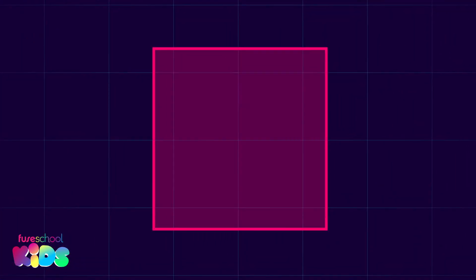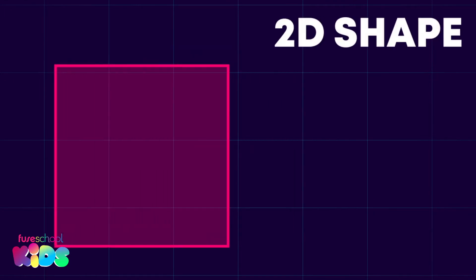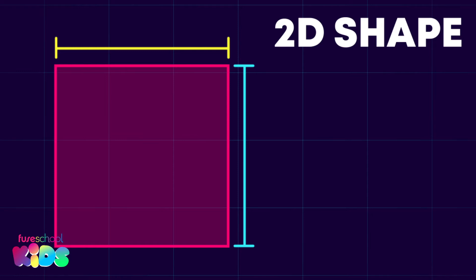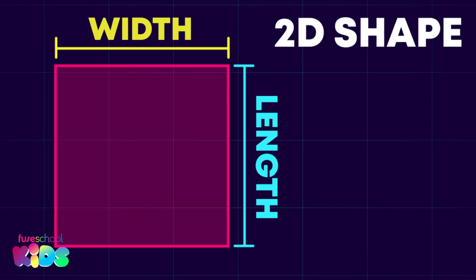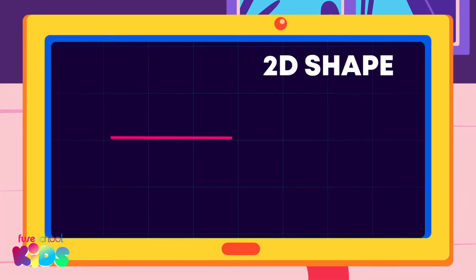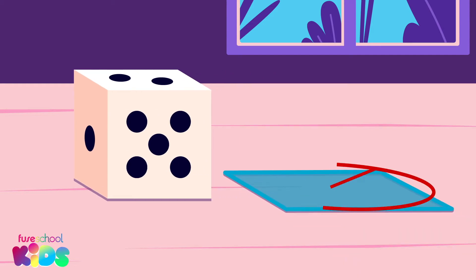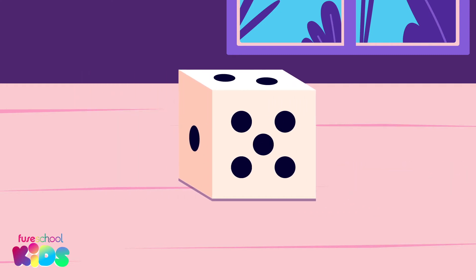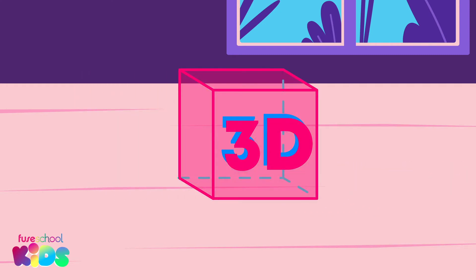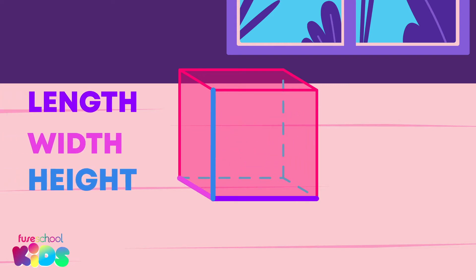Let's see why this square is a 2D shape. 2D shapes are two-dimensional because they only have two dimensions: length and width. They are flat. This dice is not a 2D shape — can you see why? It's not flat!